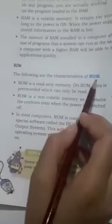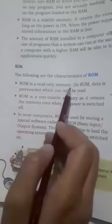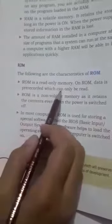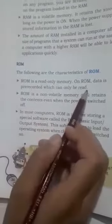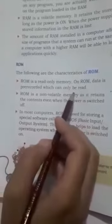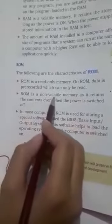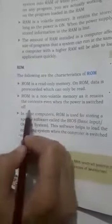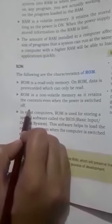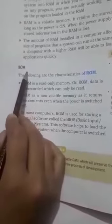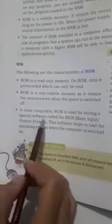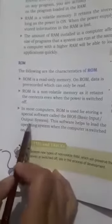Next, ROM. The characteristics of ROM: number one, ROM is read-only memory — data is pre-recorded and can only be read. ROM is a non-volatile memory and it retains its content even when the power is switched off.